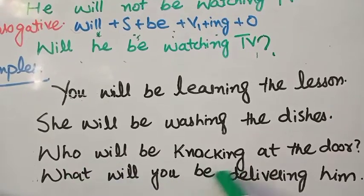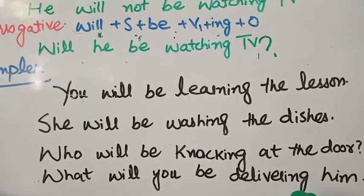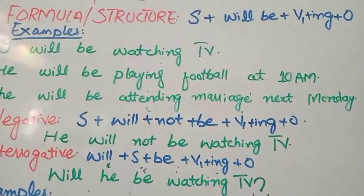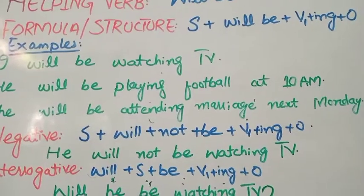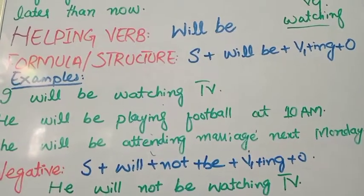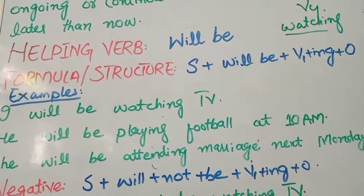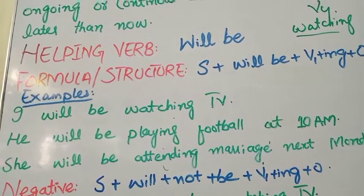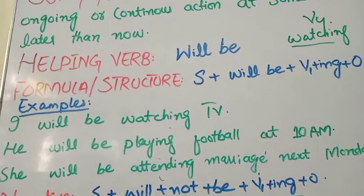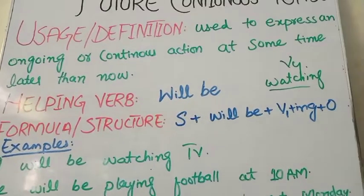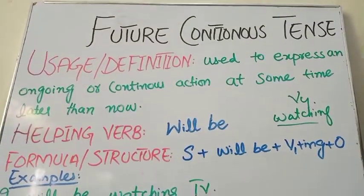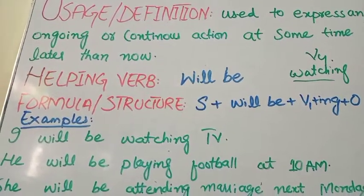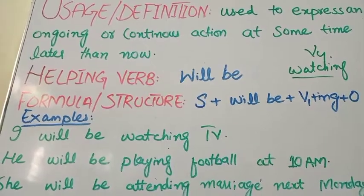Other examples include: 'Who will not be cleaning at the door?' and 'What will you be delivering him?' Practice by taking affirmative sentences and changing them to negative and interrogative. Write these on a page to build your grip. If you like the video, subscribe to my channel and give us a thumbs up. Thank you.